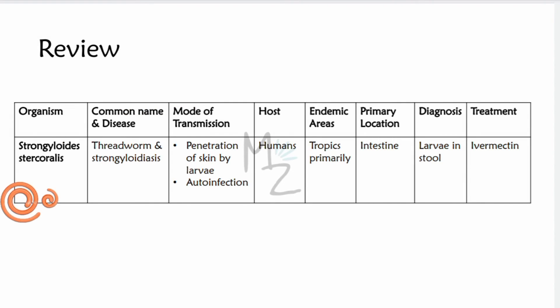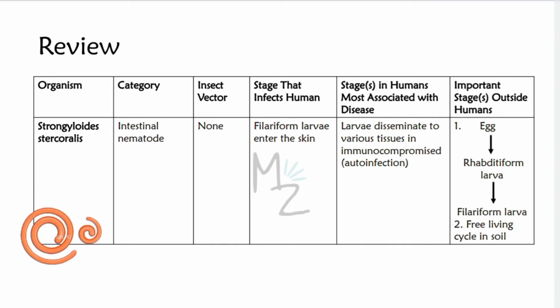Quick review: the organism is Strongyloides stercoralis, common name Threadworm, causing strongyloidiasis. Mode of transmission is penetration of skin by filariform larvae and auto-infection. Definitive hosts are humans. Endemic areas are primarily the tropics. Primary location is the intestine, but lungs can also be involved. Diagnosis is based on finding rhabditiform larvae in stool; treatment of choice is Ivermectin. Category is intestinal nematode, with no insect vector. The infective stage is filariform larvae entering the skin; important outside-human stages include eggs hatching into rhabditiform larvae, developing into filariform larvae, with a free-living cycle in the soil.